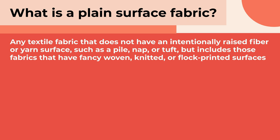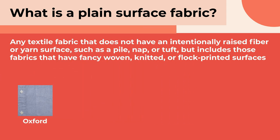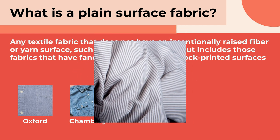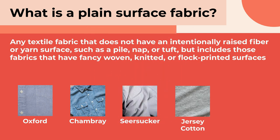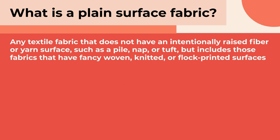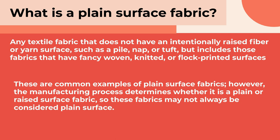Whether the product has an intentionally raised surface is determined by the manufacturing process. For example, if the manufacturing process involves brushing the fabrics, then it is likely considered a raised surface fabric. Examples of plain surface fabrics typically include oxford, chambray, seersucker, jersey cotton, and spandex. Please note these are common examples — the manufacturing process ultimately determines whether a fabric is plain or raised surface.